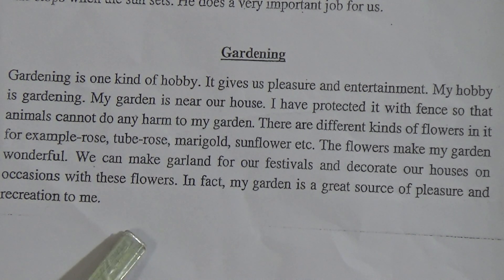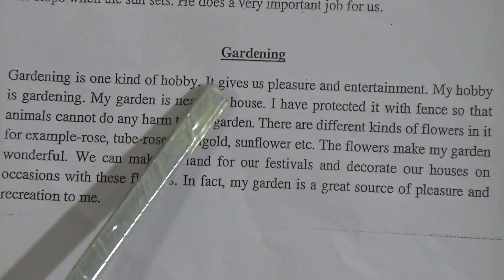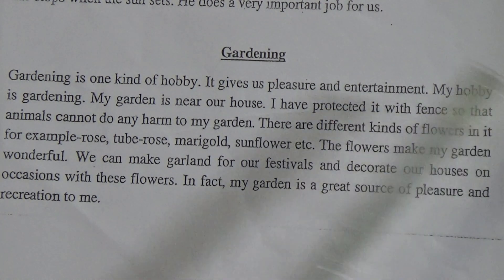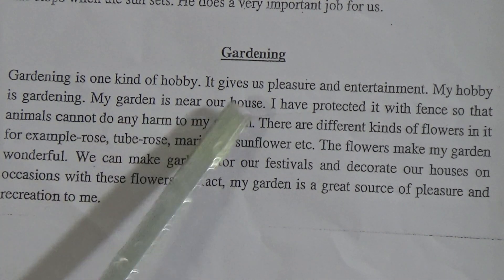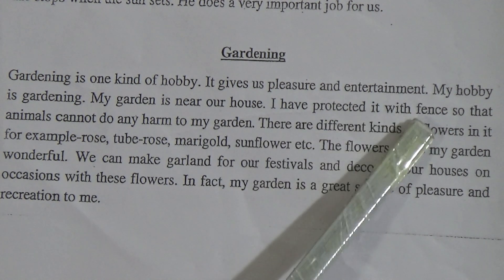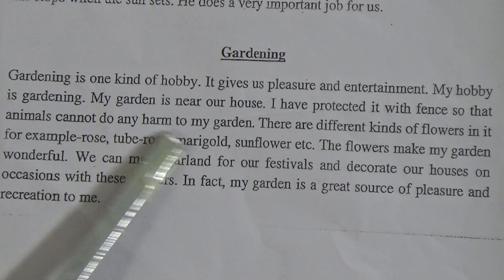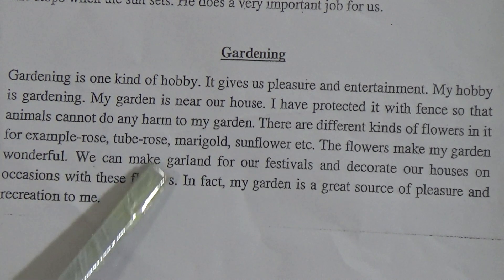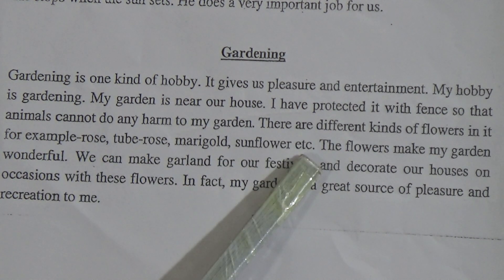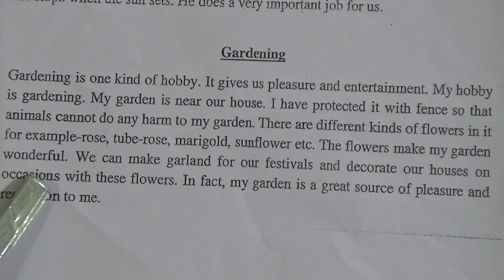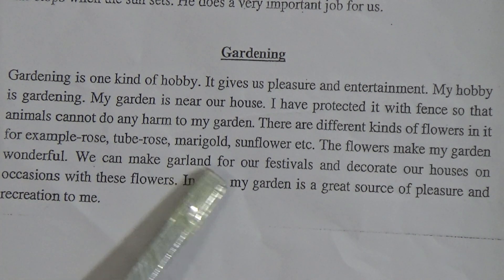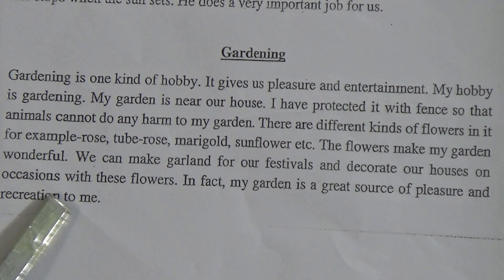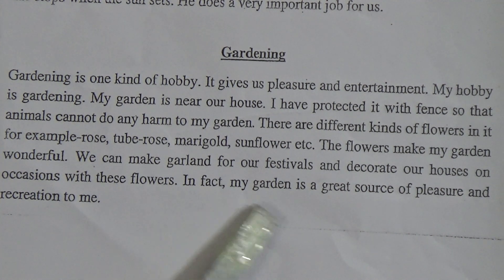Gardening is one kind of hobby. It gives us pleasure and entertainment. My hobby is gardening. My garden is near our house. I have protected it with a fence so that animals cannot do any harm to my garden. There are different kinds of flowers in it — for example, rose, tube rose, marigold, sunflower, etc. The flowers make my garden wonderful. We can make garlands for our festival and decorate our house on occasions with these flowers. In fact, my garden is a great source of pleasure and recreation to me.